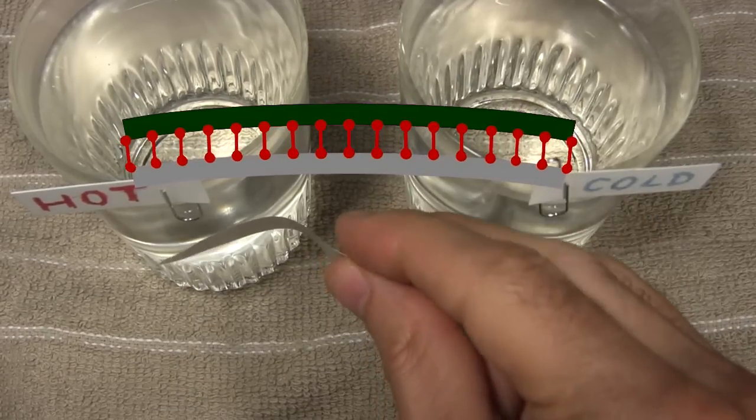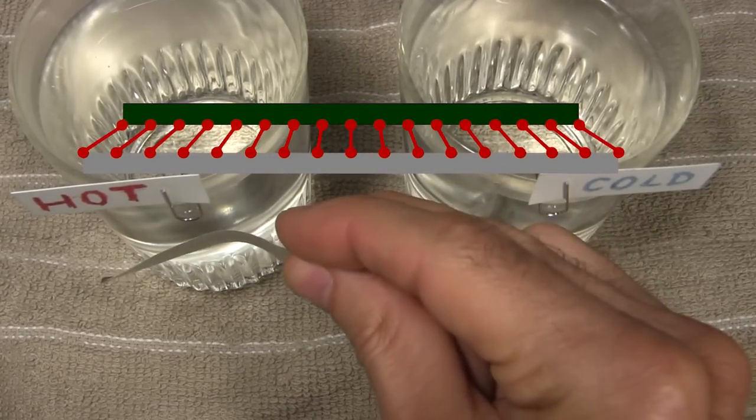In the heated air, the foil expands, pulling on the plastic. But this time that has the effect of straightening it.